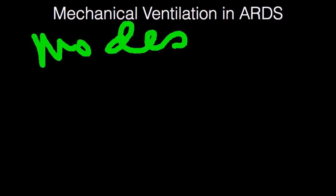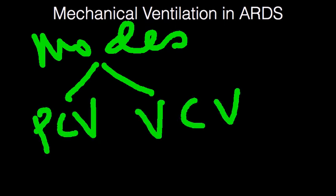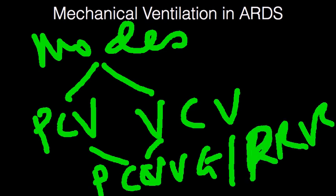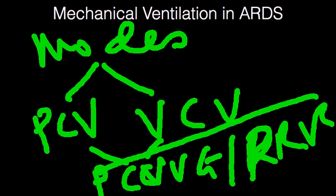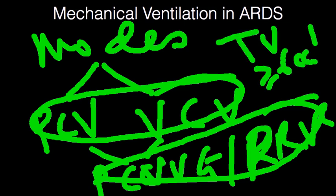Moving on to modes of ventilation: the general modes I tend to use are volume control ventilation or pressure control ventilation. Newer hybrid modes include PCVVG or PRVC — pressure-regulated volume control. These hybrid modes target a plateau pressure or overall system pressure of less than 30, while also targeting tidal volumes of at least 6 cc's per kilogram.